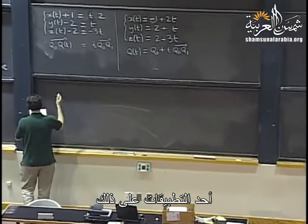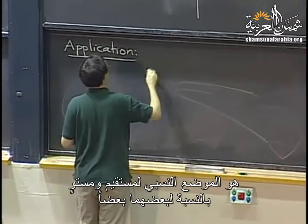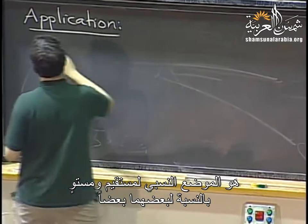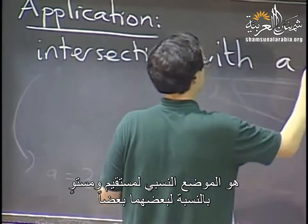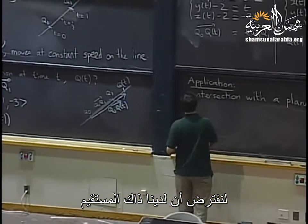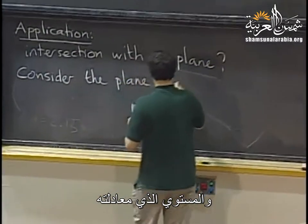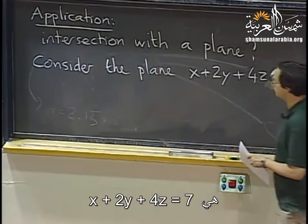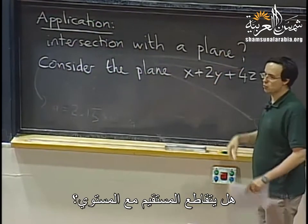One application is to think about the relative position of a line and a plane with respect to each other. Let's take the same line and consider the plane with equation x + 2y + 4z = 7. The questions we're going to ask are: does the line intersect the plane, and where does it intersect?